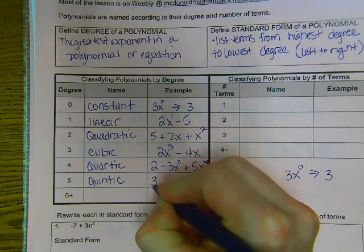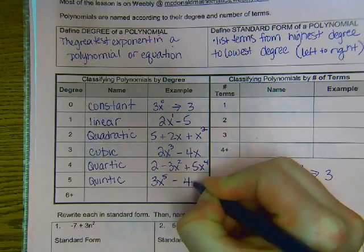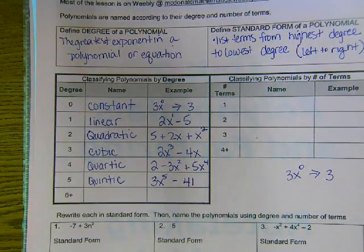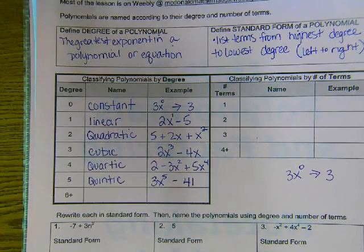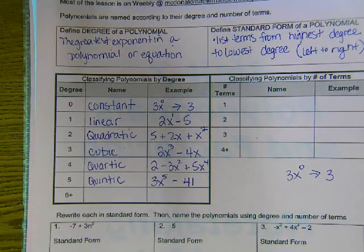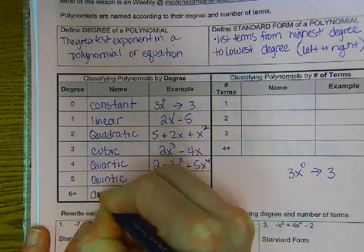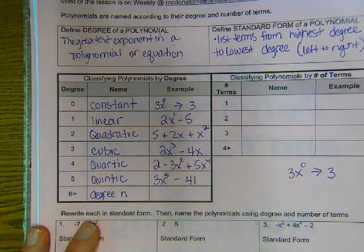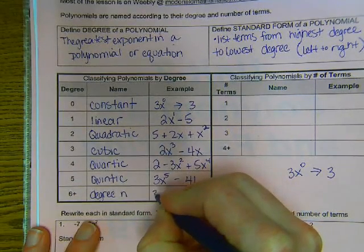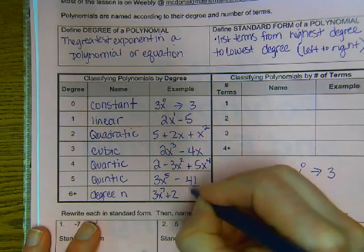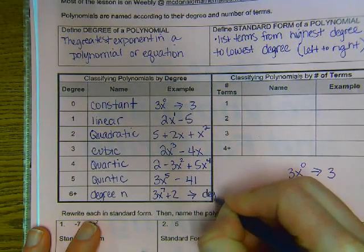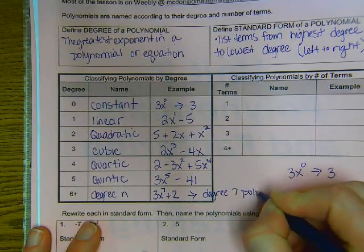So quintic, maybe I'd have 3x to the fifth minus forty-one. And then six plus. At six plus, you just say degree six polynomial. If it's seven, degree seven polynomial. If it's degree eight, degree eight polynomial. I know, really boring. So six plus, we'll say degree n. So if I had, I'm going to say 3x to the seventh plus two, I would say this is just a degree seven polynomial. That's how I would describe it.